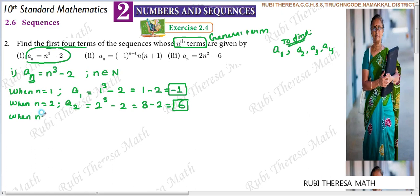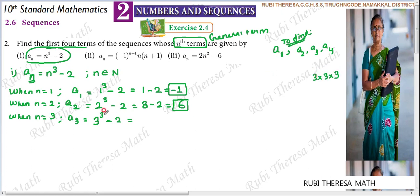When n equals 3, A3 = 3³ - 2. The value of 3 cubed is 27 — 3 multiplied 3 times: 3 threes are 9, 9 threes are 27. So 27 minus 2 equals 25. The third term is 25.